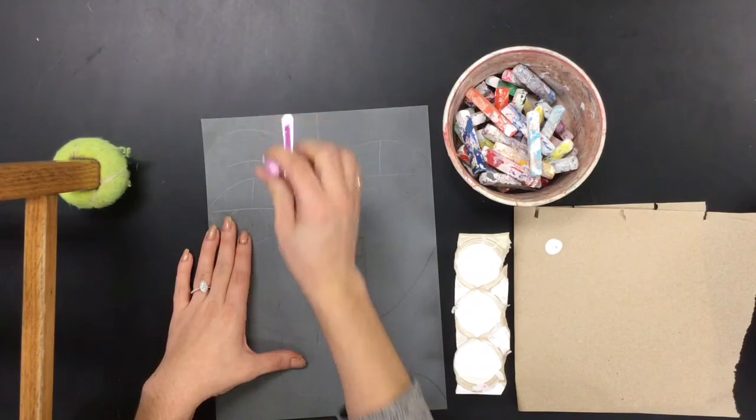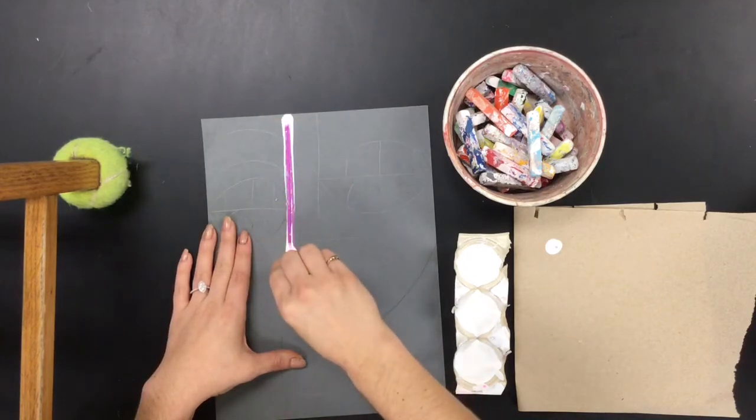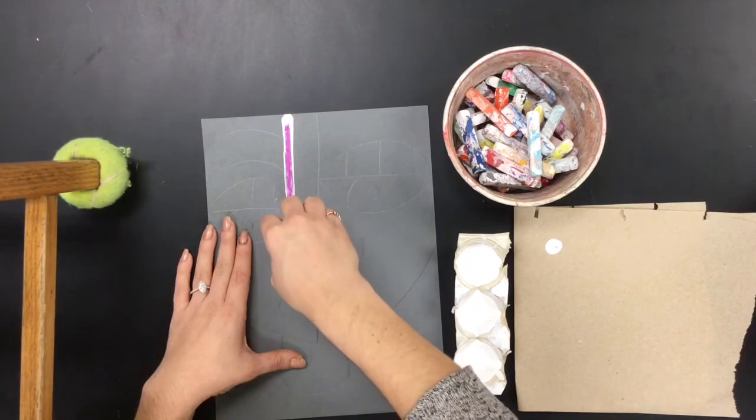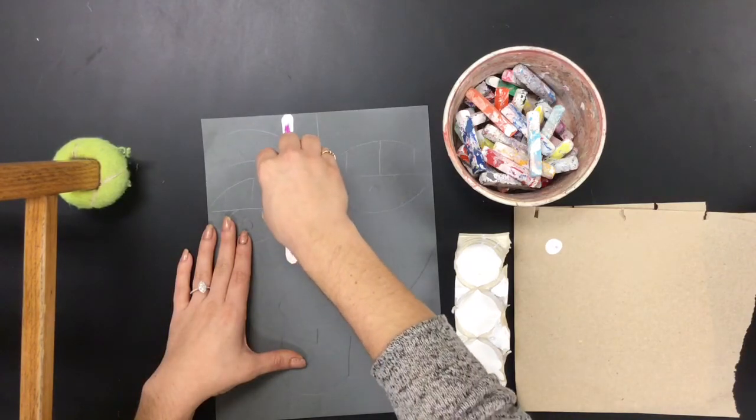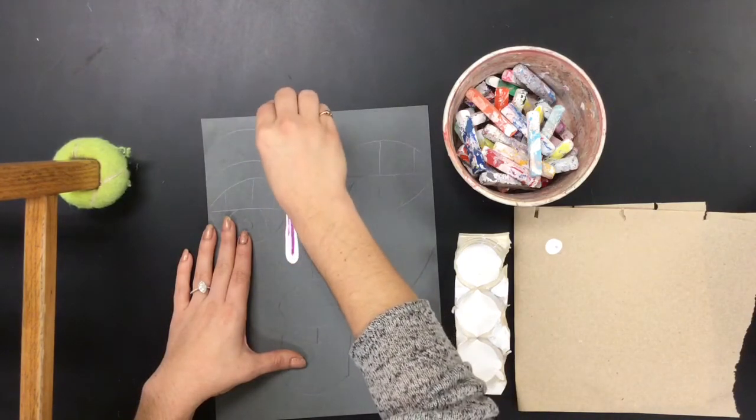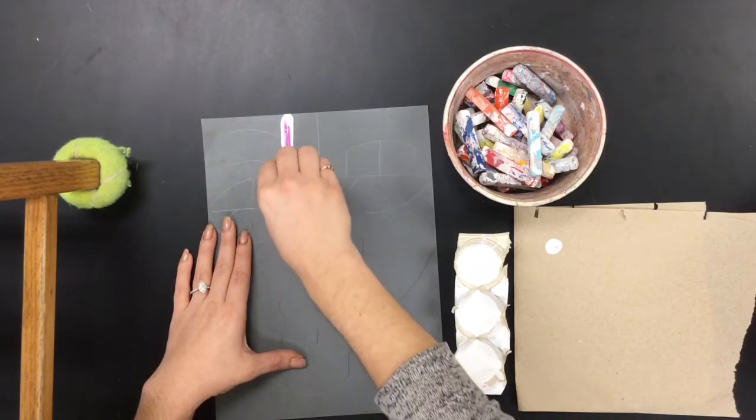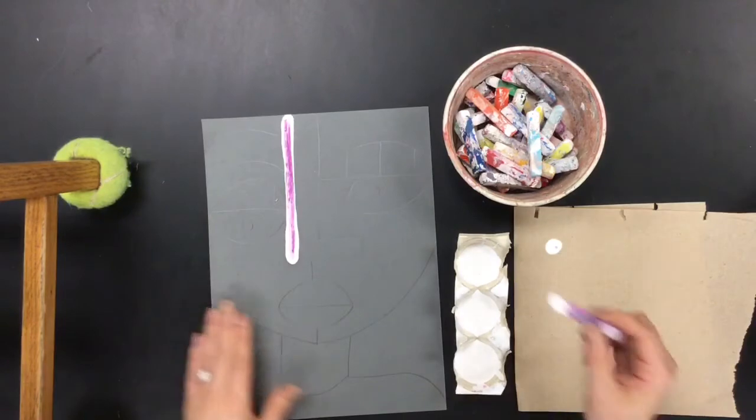So I'm going to go back and I'm going to add a little bit more of that white paint to make sure that I have paint and chalk mixed through the entire line. There we go! Much better!